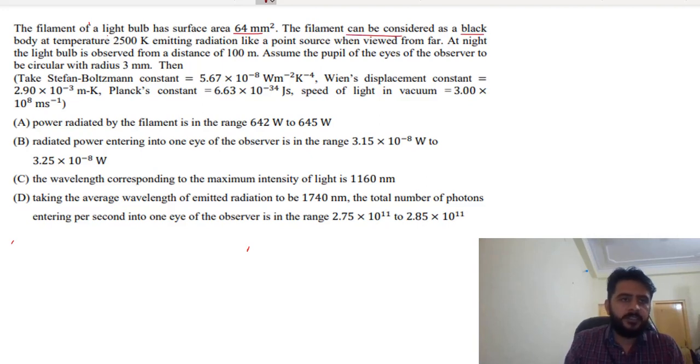At a temperature of 2500 Kelvin, emitting radiation like a point source when viewed from far. At night, the light bulb is observed at a distance of 100 meters. Assuming that the pupil of the eye of the observer is equal to 3 millimeters.